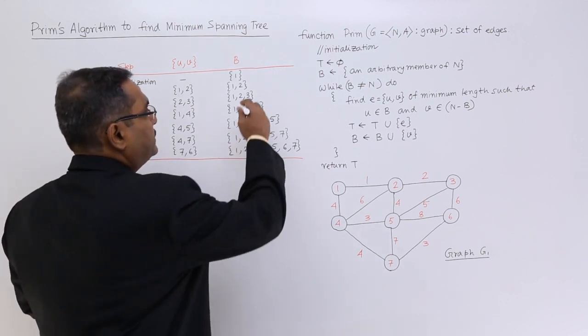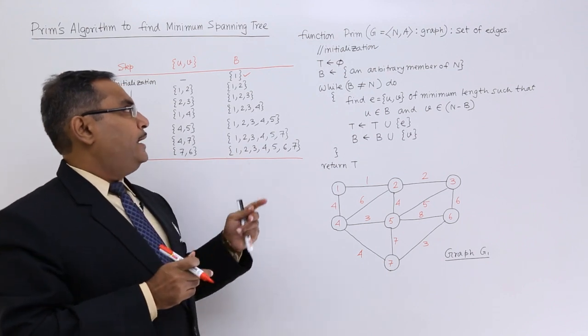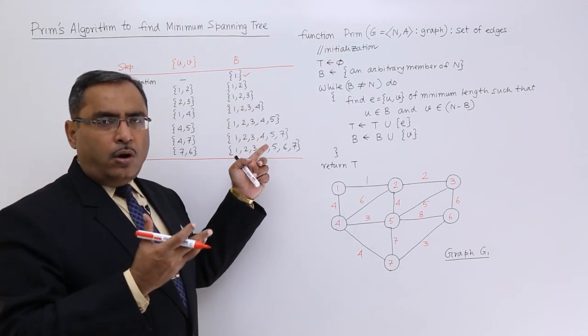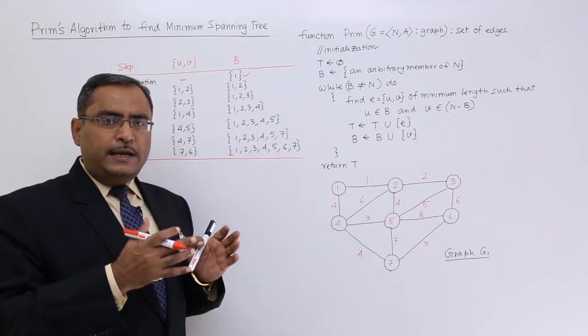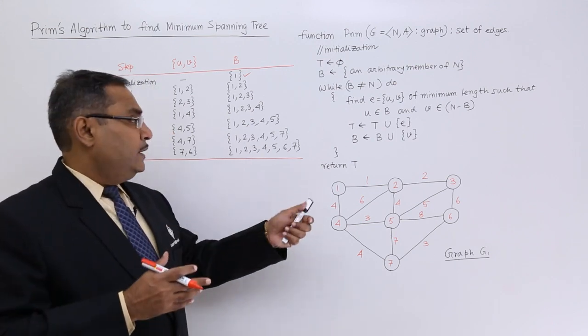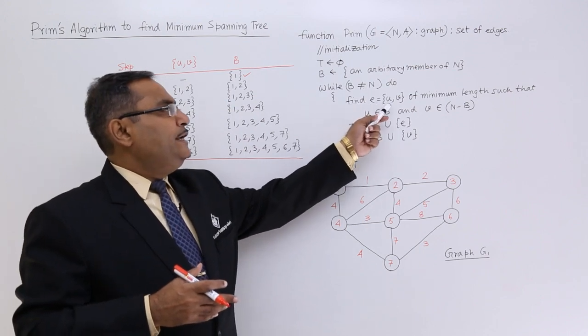We have discussed this: while b is not equal to n, until b is including all the vertices—how many vertices are there? 7 vertices—until b is accumulating all the 7 vertices inside, this algorithm will be continued. Find e(u,v)